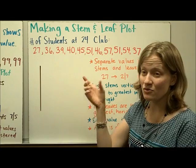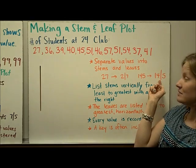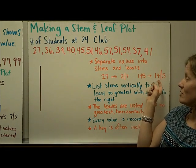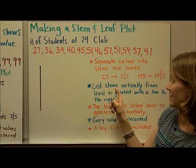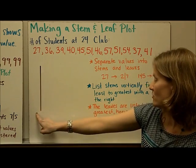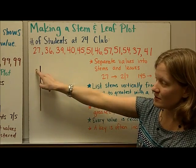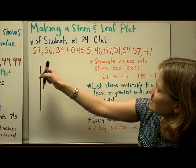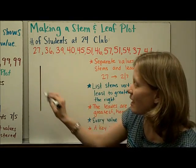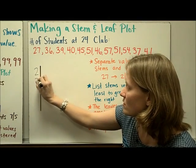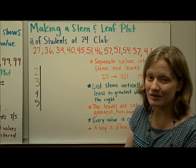If you had three-digit data — for example, 145 — you could still separate it between the tens and ones digit, so that 14 would be your stem and 5 would be your leaf. Next, you list stems vertically from least to greatest with a line to the right. I'm going to list my stems starting with the smallest: I have data in the 20s, 30s, 40s, and 50s. So my stems are going to be 2, 3, 4, and 5.